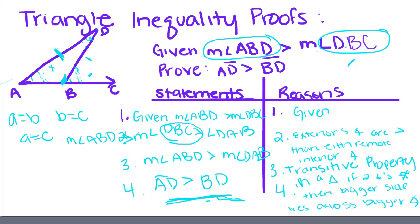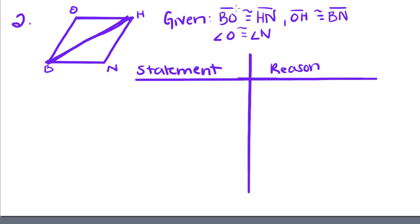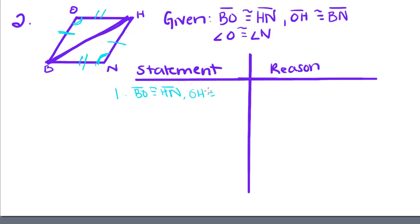For our second proof: given that BO is congruent to HN, and OH is congruent to BN.